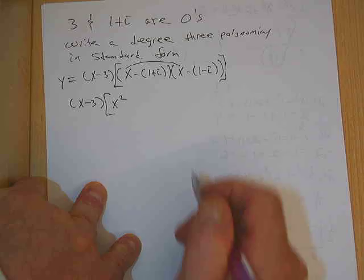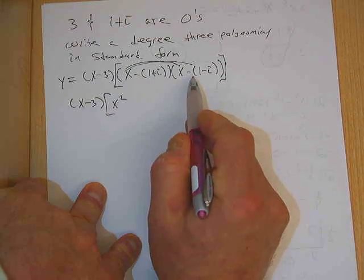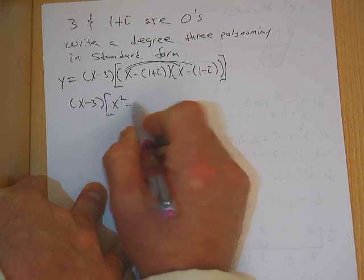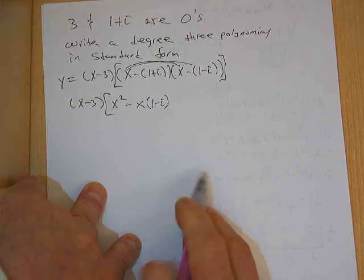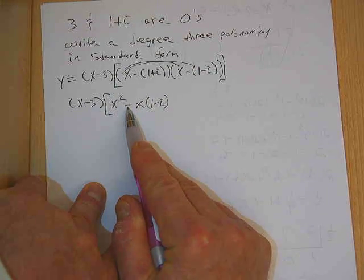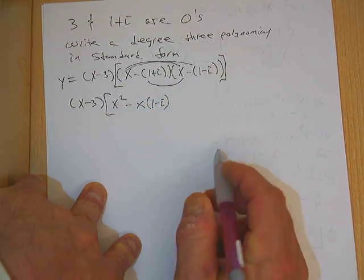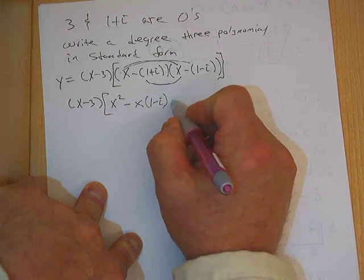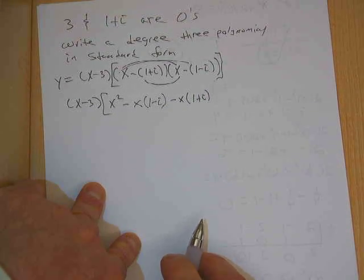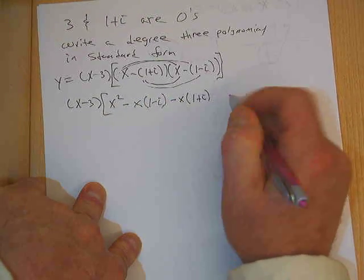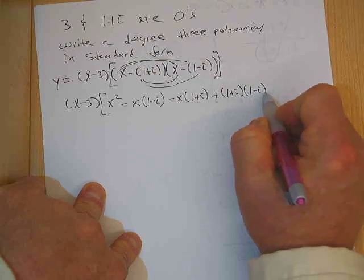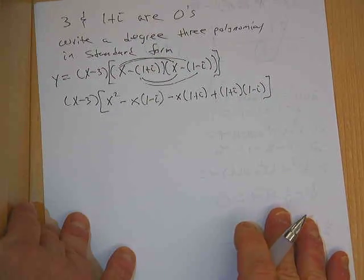x times x, x squared. x times negative (1 minus i). Here's how I'm going to write this down: negative x times (1 minus i) with the negative sign. Now I've got negative (1 plus i) times x, so negative x times (1 plus i). Then I get plus (1 plus i) times (1 minus i).